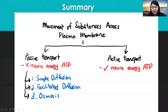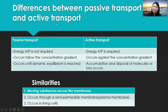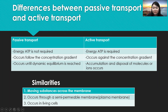For the summary: movement of substances across the plasma membrane has two types — passive transport and active transport. Passive transport does not require energy ATP, while active transport requires energy ATP. Passive transport has three categories: simple diffusion, facilitated diffusion, and osmosis. The differences: passive transport follows the concentration gradient; active transport goes against it. Passive transport occurs until dynamic equilibrium is reached; in active transport, accumulation and disposal of molecules or ions always occur.